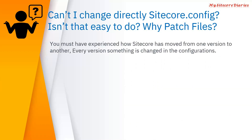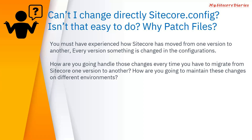Sitecore moves from one version to another, and each upgrade introduces new or removed configurations. If you make changes directly in the config file, handling those changes during every upgrade becomes very difficult. Maintenance also becomes hard because you have to remember which file you changed. If there's an issue and you raise a Sitecore ticket, it is also very difficult for them to identify whether the problem is from your configuration changes or from Sitecore itself. So direct changes to Sitecore config create both maintenance and upgrade problems.